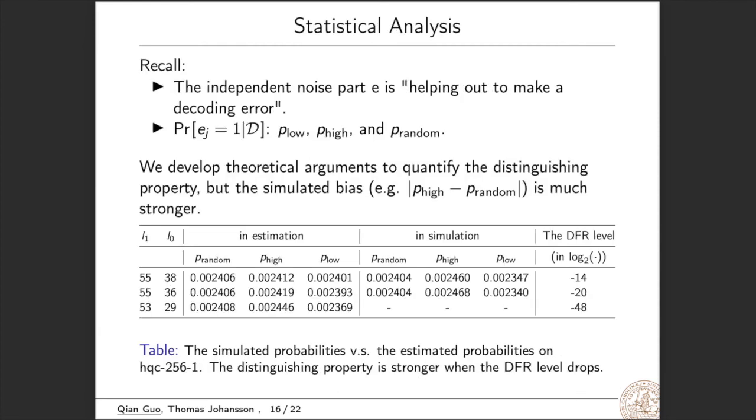We then discuss the statistical analysis. Recall that the independent noise part e is helping out to make a decoding error. And also we have this probability that ej is equal to one conditioned on decryption failures. We denote this probability to be p. So we have p_random corresponds to the case 2 interval. And p_low and p_high corresponds to the case 1 interval.